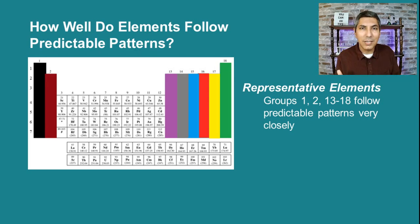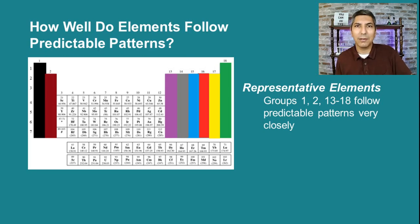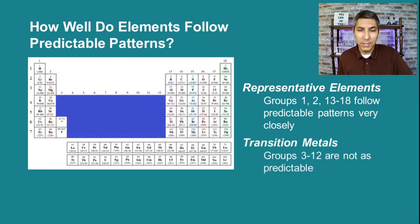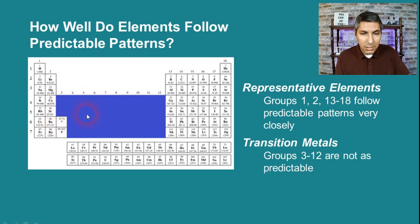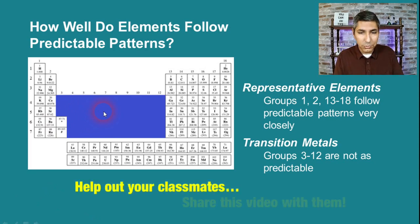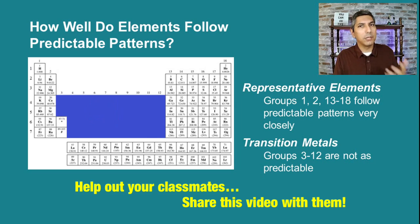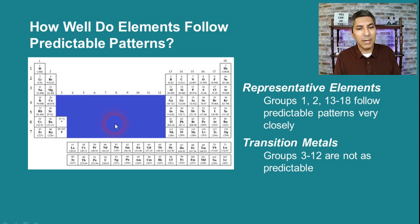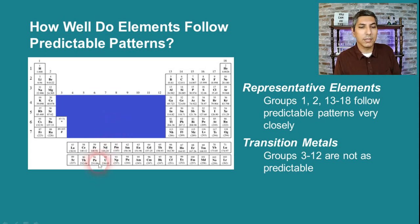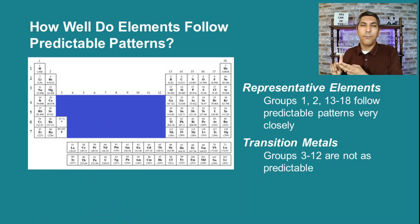We call those representative elements because they represent patterns on the periodic table very well. In a future video we'll talk about trends on the table, and we'll usually go right to those representative elements because they represent those patterns quite well. In the middle of the table we have the transition metals — those 10 groups in the middle, groups 3 through 12. They are not quite as predictable as far as patterns on the periodic table, but that doesn't mean they're useless.